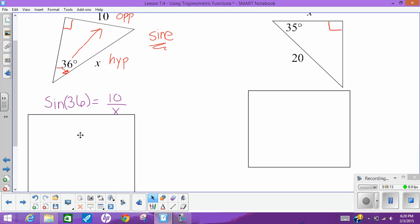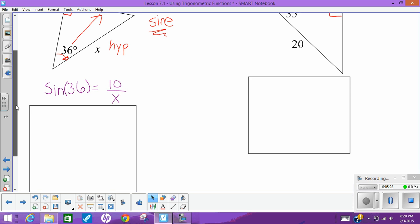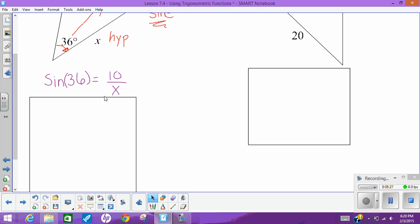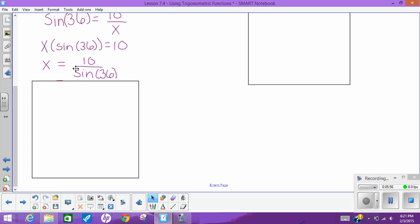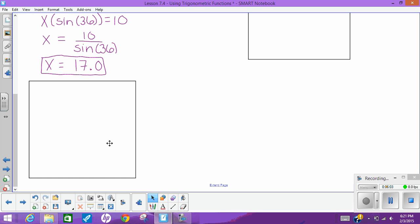So sine of 36, sine of the angle, is equal to opposite over hypotenuse. That means sine of 36 is equal to 10 over x, and we are going to try and solve for x here. We need to get x out of the denominator of this fraction, so we multiply both sides by x. We end up with x times sine of 36 - sine of 36 represents one value even though it looks kind of new, kind of funky - so this is x times sine 36 equals 10. Then we're going to divide both sides by the sine of 36.